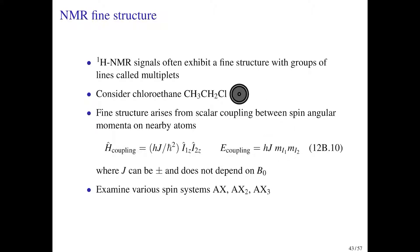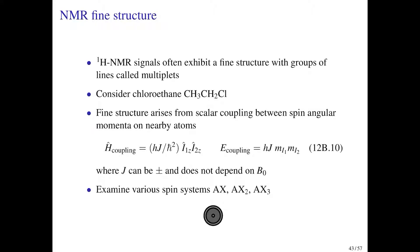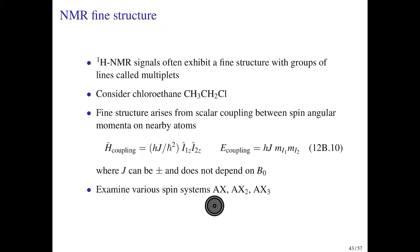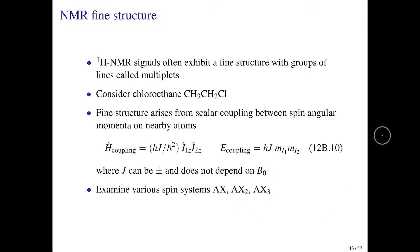The value of J is determined by the molecule itself, not any applied external field. We'll look at several types of spin systems. In this notation, A and X denote protons. In an AX system we have two protons in chemically very different environments, so their NMR frequencies are very different. In an AX2 system we have one A-type and two X-type protons; in AX3 we have one A-type and three X-type. We'll look at the patterns for each of these cases.